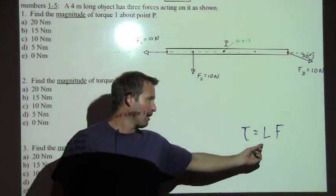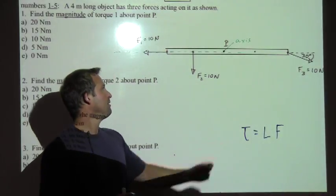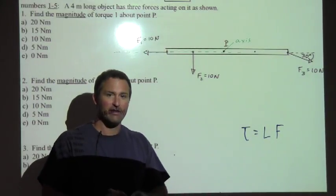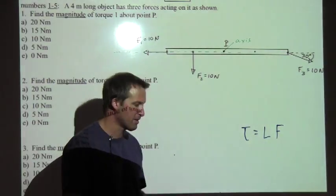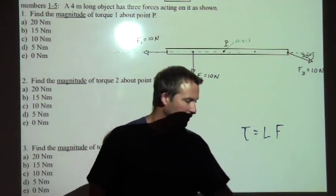And the definition of this lever arm is the shortest distance between that dotted line and my axis point. And for force one, lever arm one is zero, the shortest distance between this axis and the dotted line is zero.